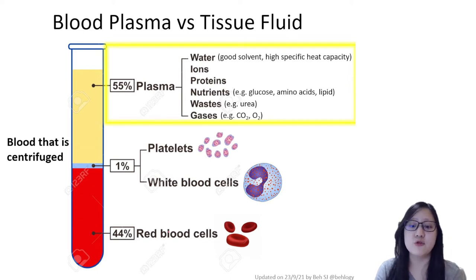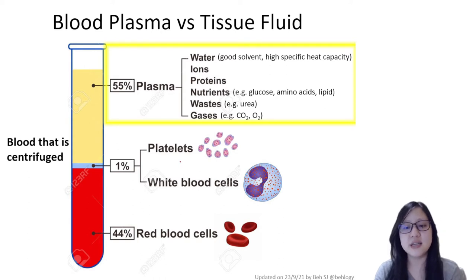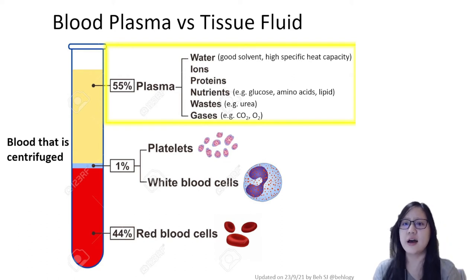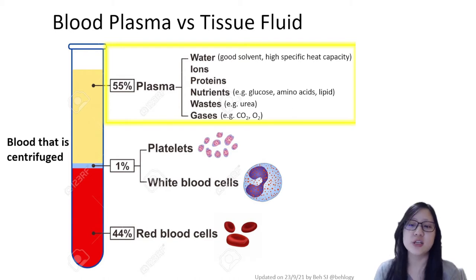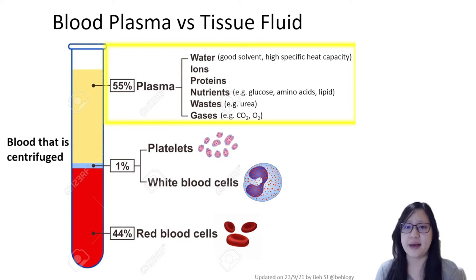The lower section is red blood cells, which make up around 44% of the entire volume. About 1% would be platelets and white blood cells, and the remaining 55% at the top layer is the least dense — that's because it contains a lot of water as well as ions, proteins, nutrients, wastes, and gases. Water is a very important component of blood plasma because it is a good solvent and has high specific heat capacity.